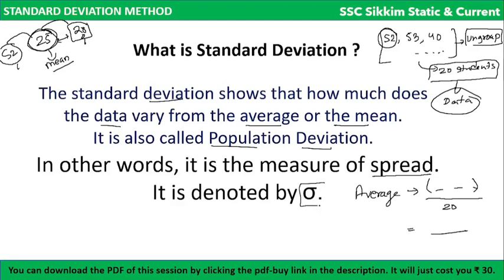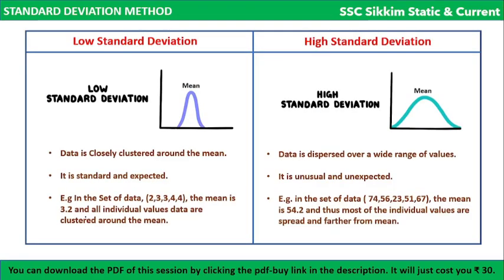Mathematically, standard deviation is denoted by sigma. There are two kinds: low standard deviation and high standard deviation. In low standard deviation, the data is closely clustered around the mean — every data point is near the mean. For example, if x equals 5 and the mean is around 5, then the data near 5 gives a low standard deviation.